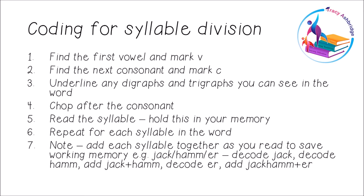So how do we code for syllable division? First, we find the vowel and mark it with a V, then find the consonant and mark it with a C. We underline any digraphs and trigraphs we can see. We read each syllable and add them together as we go — for example, reading the word 'jackhammer', I'd sound out 'jack', then 'ham', put jack and ham together, and then add 'er': jack-ham-er. This reduces the load on working memory.